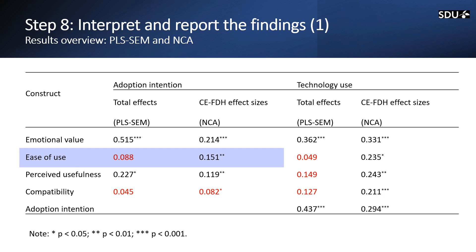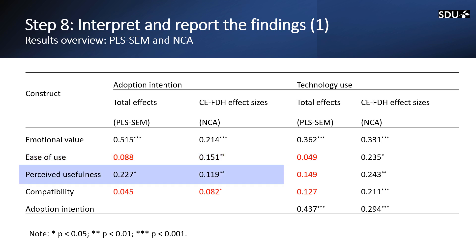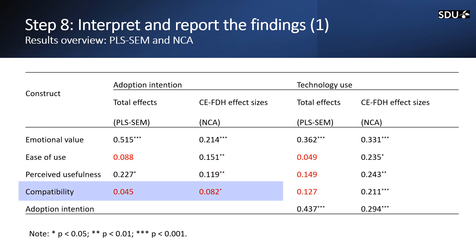So ease of use is not a 'should have' factor but a 'must have' factor. Perceived usefulness is the same as emotional value — both a 'should have' factor and a 'must have' factor. For compatibility, it is a non-significant determinant and not a necessary condition because, though the p value is good, the d value is smaller than 0.1. So this is neither a 'must have' nor a 'should have'.